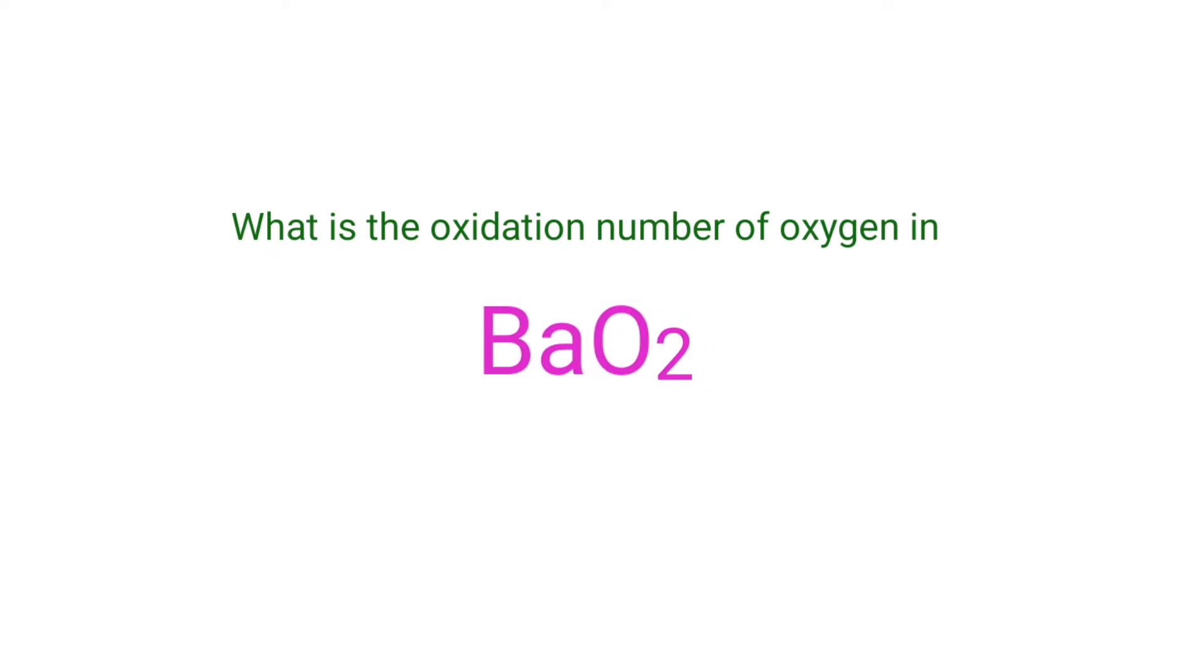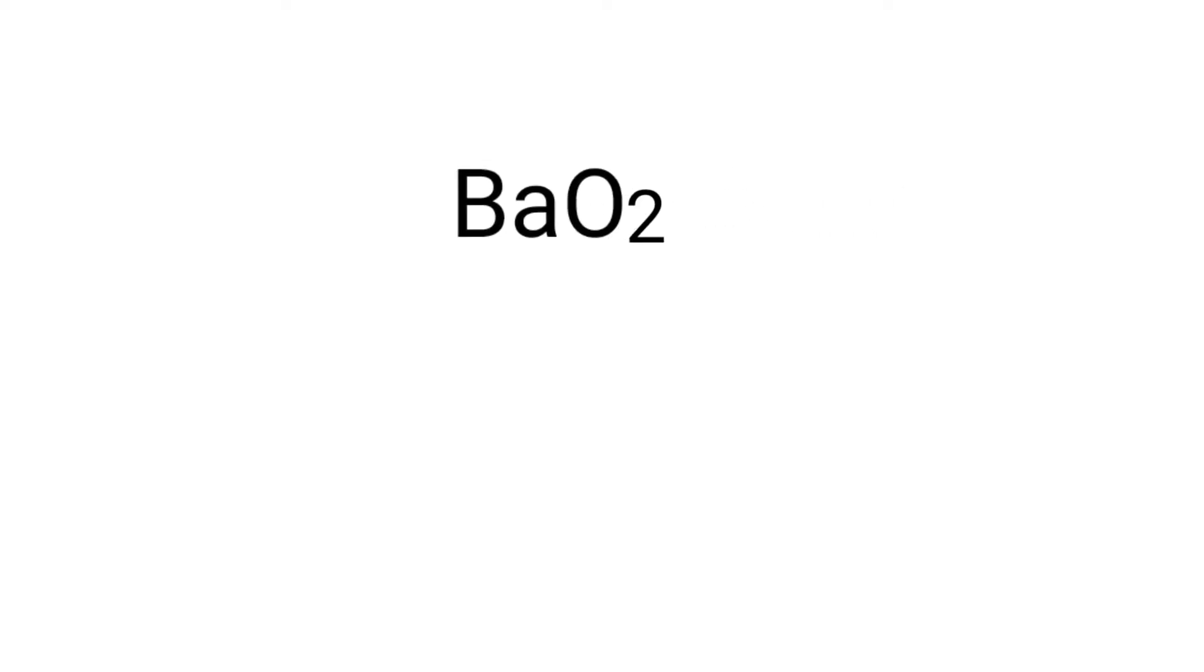What is the oxidation number of oxygen and barium in barium peroxide? We can use the oxidation number rules to determine oxidation numbers. Barium peroxide is a neutral compound with overall oxidation number 0. Therefore, we know that the sum of the oxidation number of the atoms is equal to 0.